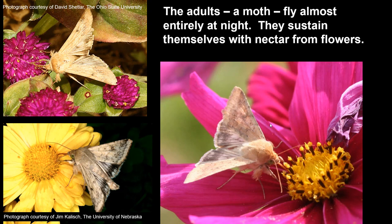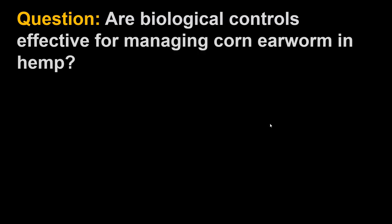Another issue is flowers. These moths sustain themselves on flowers, and often it is a great idea to have flowering plants among crops because natural enemies that attack pests feed on nectar and pollen. However, if corn earworm is your problem, it may not be a great idea, because adult moths will be looking for flowers to sustain themselves and then lay eggs. If those flowers happen to be right next to a hemp field, egg-laying could increase in that nearby hemp field.